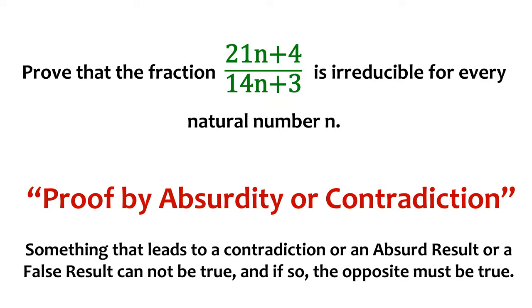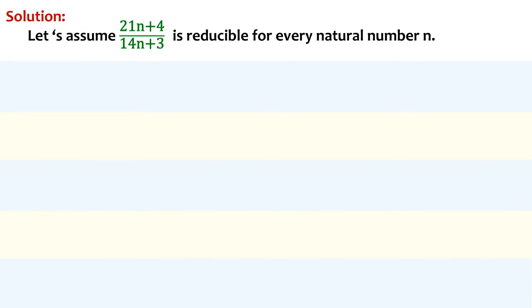So what we'll do is, we'll assume that this fraction is reducible. If this indeed is irreducible, we'll arrive at some contradiction or a result that is absurd or false and that will tell us that our assumption was wrong. Let's proceed. Let's suppose (21n + 4)/(14n + 3) is reducible or (14n + 3 + 7n + 1)/(14n + 3) is reducible.